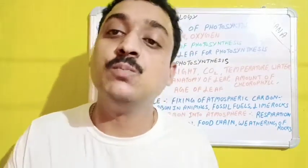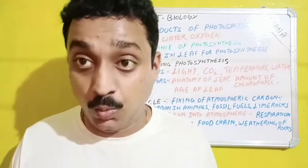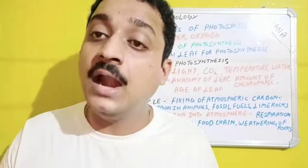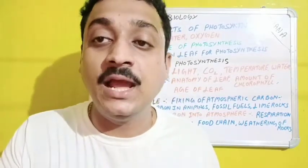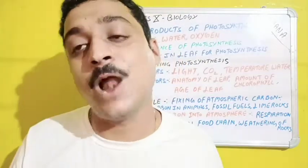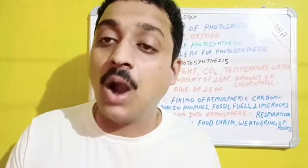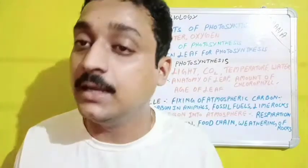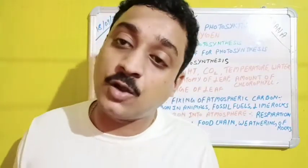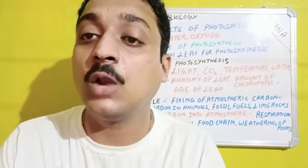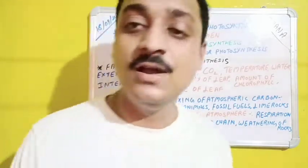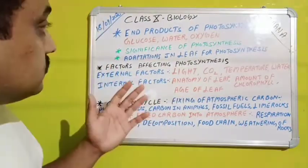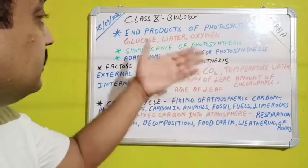If water content is very much in excess, the plant will store the extra water while utilizing only the needed portion for photosynthesis. Now for internal factors: the anatomy of the leaf plays a role — the structure, whether the leaf is tender, young, or old, all matters for the rate of photosynthesis.